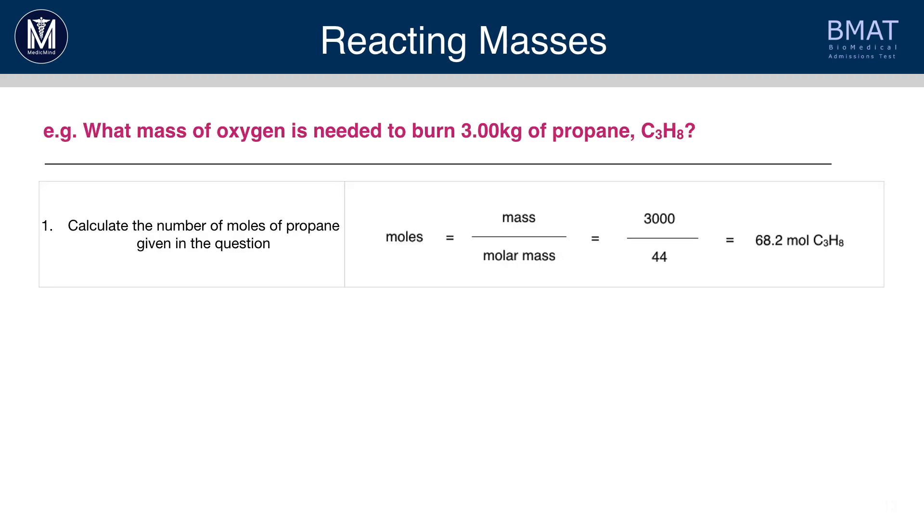So, step one here would be to calculate the number of moles of propane given in the question. So, they tell you that there's 3 kilograms of propane. Remember, moles is always done in grams, so therefore convert this to 3000 grams. They tell us that the molar mass of propane is 44, so therefore we can do 3000 divided by 44, which gives us 68.2 moles.